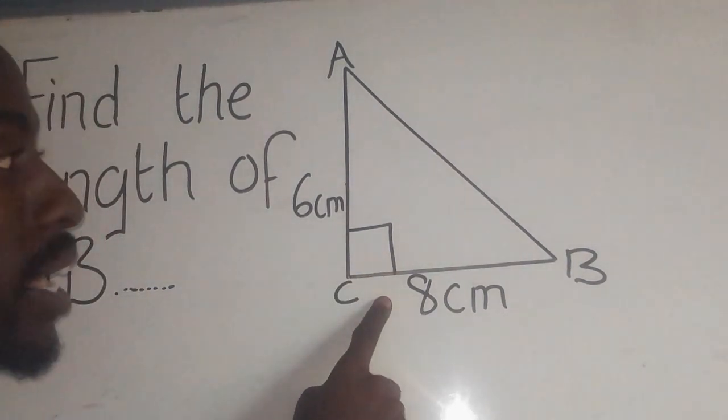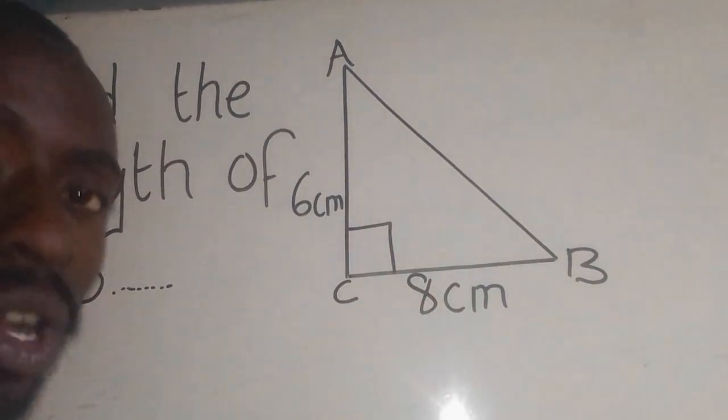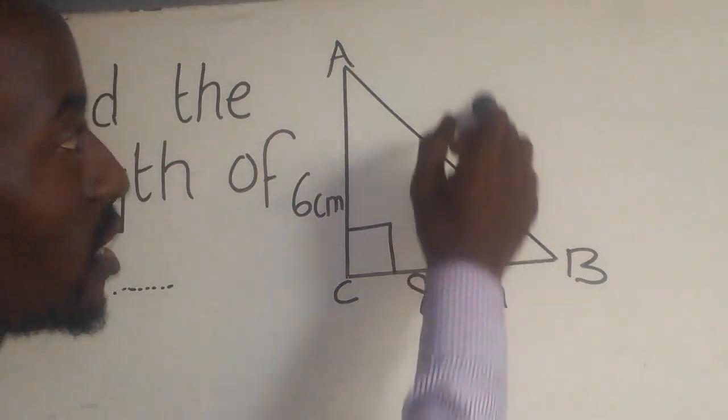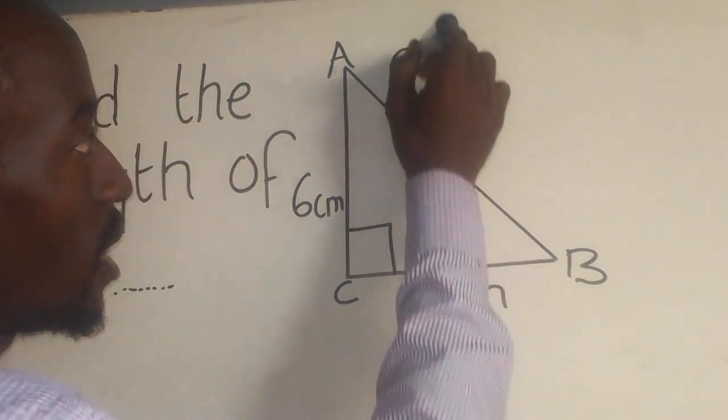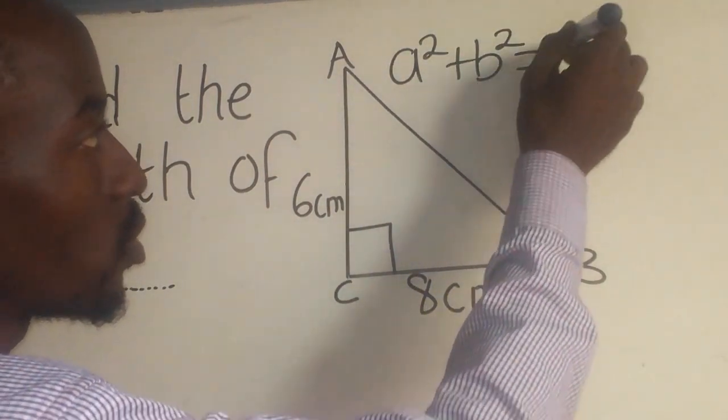Whenever they say find the length in a right-angled triangle, we need to use the Pythagorean theorem, which is given by a² + b² = c². So a is this one, b is this one, and c is this side here.